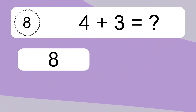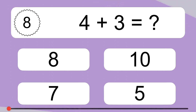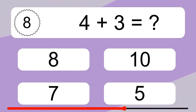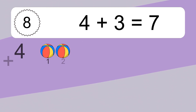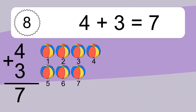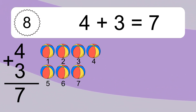4 plus 3 equals what? 4 plus 3 equals 7. Let's count it. 1, 2, 3, 4, 5, 6, 7.